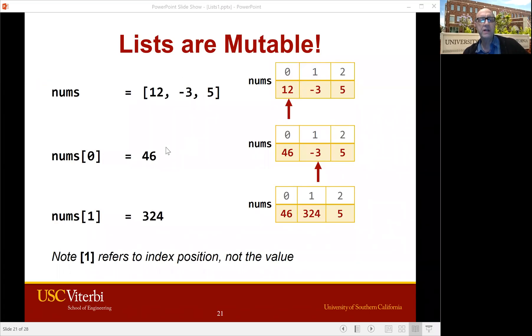So let's start with just changing the contents of a single item. So here's our original list, 12, negative 3, 5. And we're going to change nums, the name of the list is nums. So nums bracket 0 is going to be set to 46. So the 12 is gone, now it's 46. Then we're going to say nums bracket 1 equals 324. So the negative 3 is gone and 324 is now in slot 1. And just to check, remember this 1 refers to the index, not the contents.